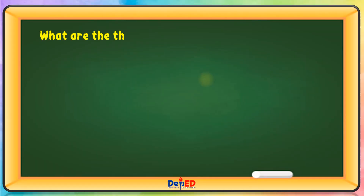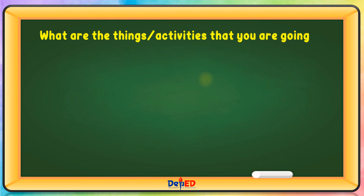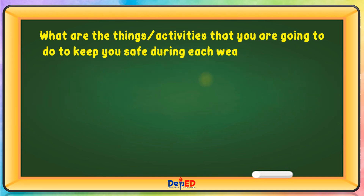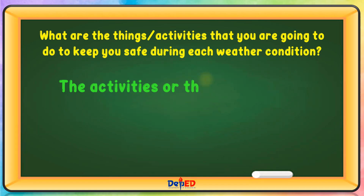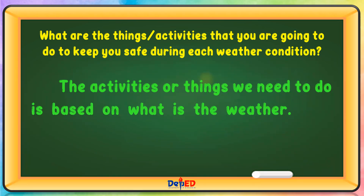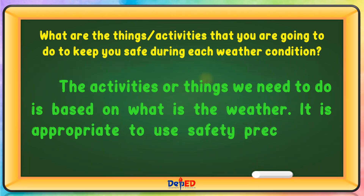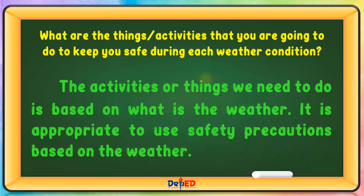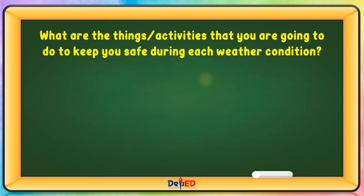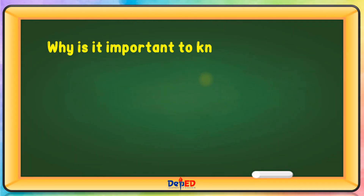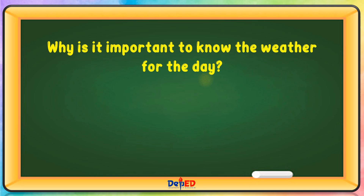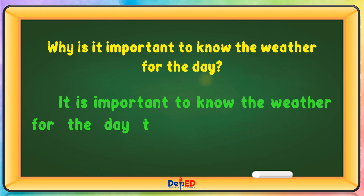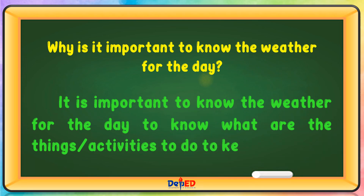What are the things or activities that you are going to do to keep you safe during each weather condition? The activities or things we need to do are based on what the weather is — it is appropriate to use safety precautions based on the weather. It is important to know the weather for the day to know what activities to do to keep you safe.